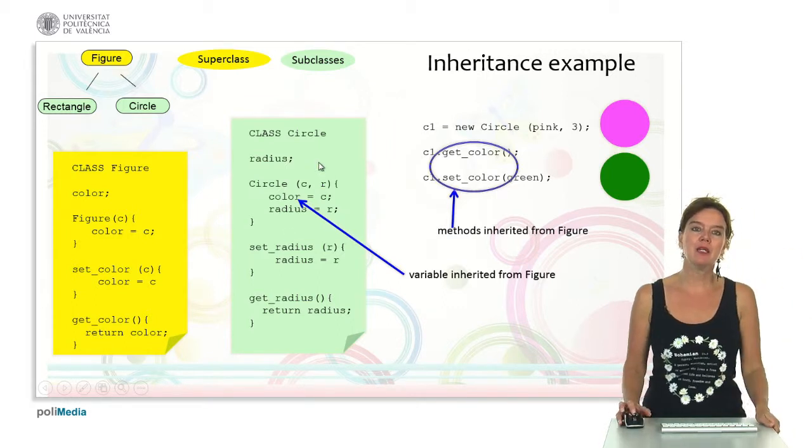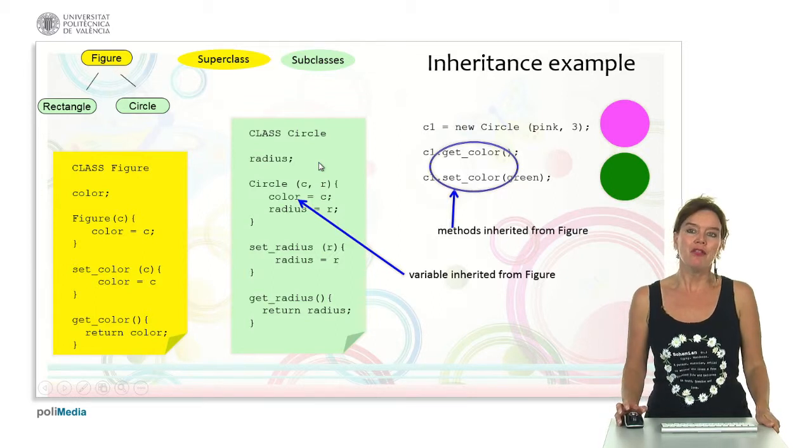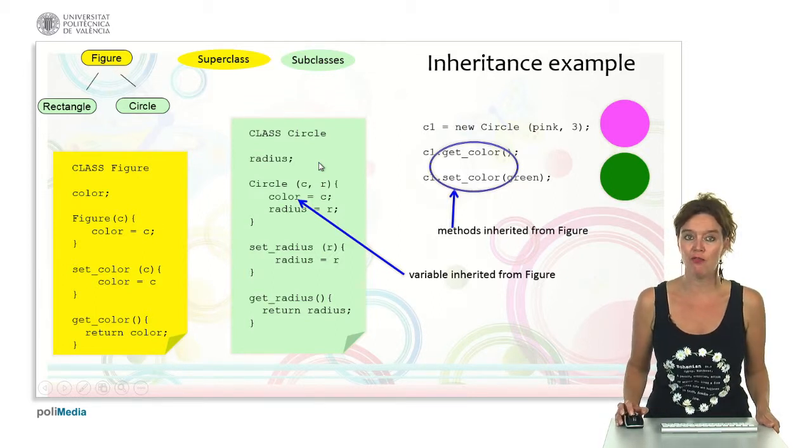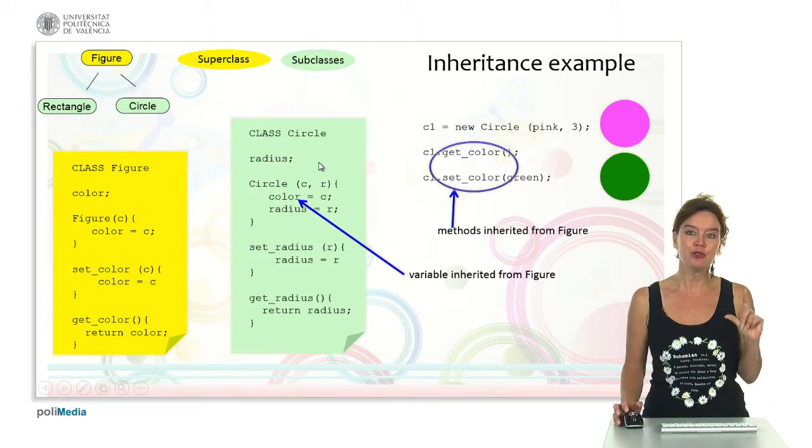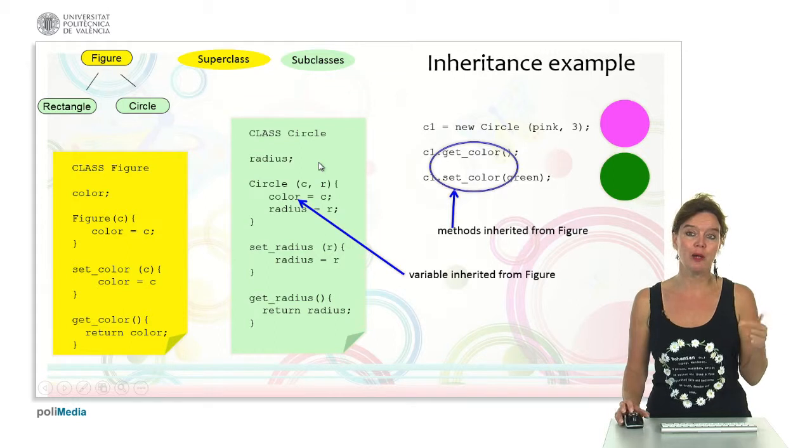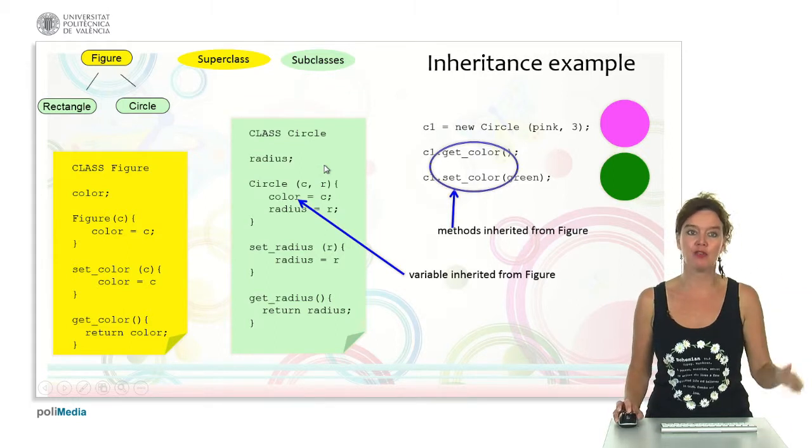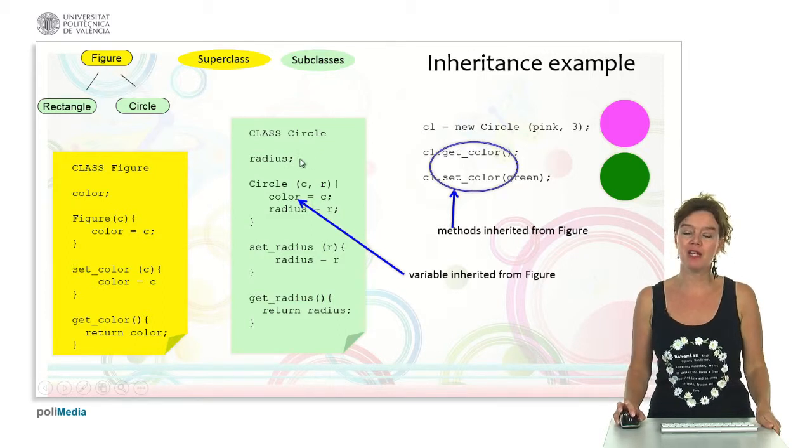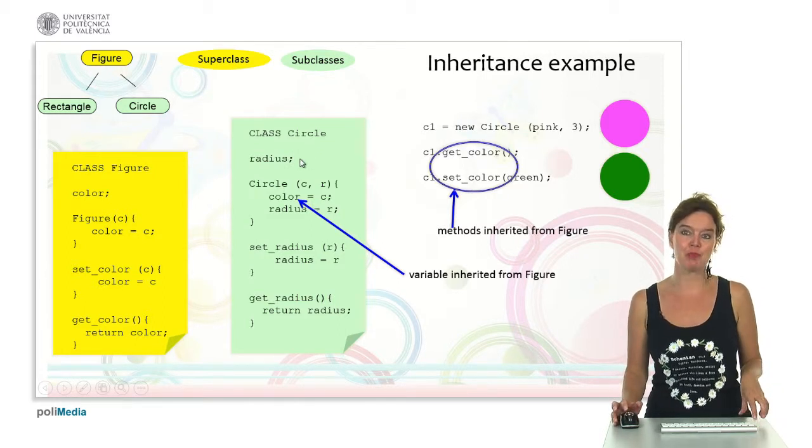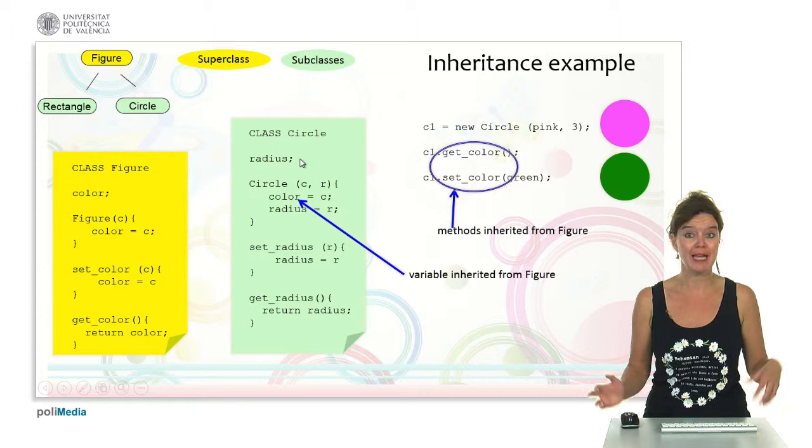So here in the green we see the class circle. Now the class circle is a subclass of the superclass figure. So it doesn't need to define the attribute color because it inherits it from its superclass figure. So it only defines a characteristic that is specific to circles, namely having a radius.